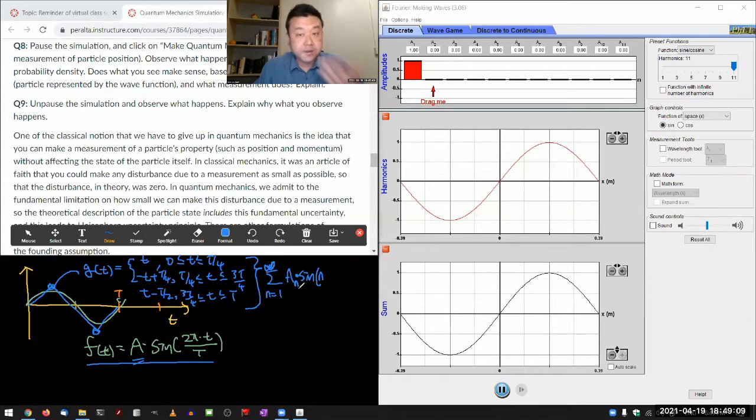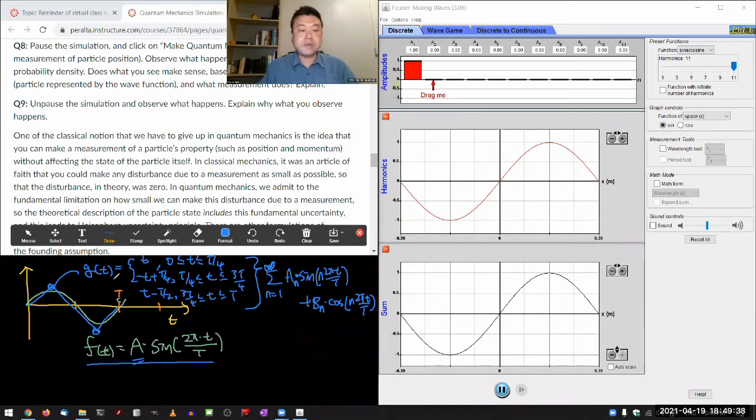For n equals values higher than 1, that would be my higher harmonics. So, n times 2 pi t over T plus, so this is my function that's odd over the period. There's also a function that's even over the period, cosine. So, b_n times cosine of n 2 pi t over T. So, the idea that any kind of complicated arbitrary function that's periodic can be represented by this series expansion in terms of sine and cosine functions, that's Fourier analysis.